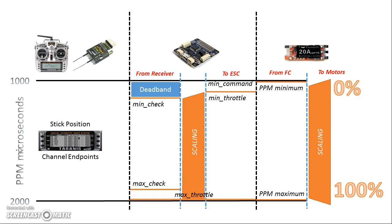If your channels aren't calibrated correctly, your copter is going to drift — it won't stay stationary because the channel may not be centered. In the case of the throttle, if it's not calibrated right, you may not get full power, you may not be able to go all the way to zero throttle when you want to shut it down, or you may not be able to input stick commands.